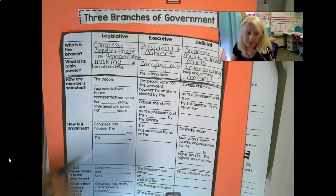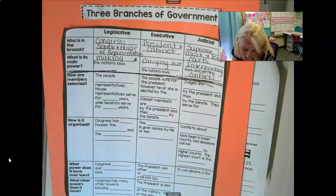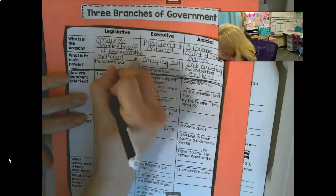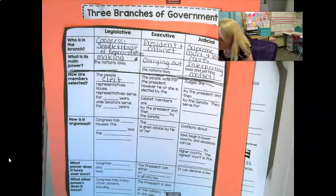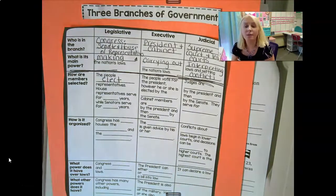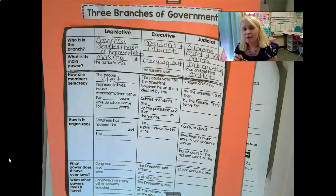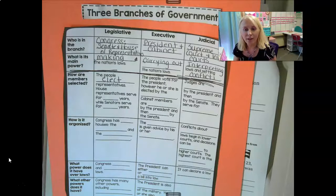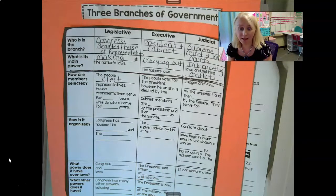How are members selected? For the legislature, the people elect representatives. A representative is somebody who acts on behalf of someone else. If we made the laws ourselves and dealt with all that Congress deals with, that's all we would ever have time for. So we elect these people to do the job of governing on our behalf — they are our representatives, representing us in Washington D.C.